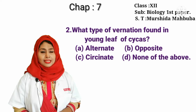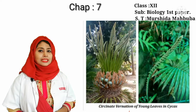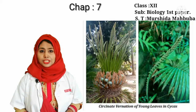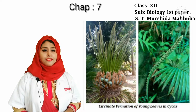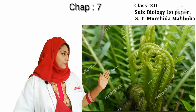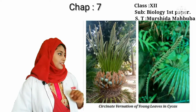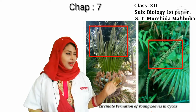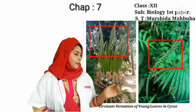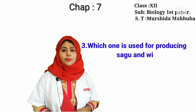Our next question is: what type of vernation is found in young leaves of Cycas? Cycas has circinate vernation, like fern. This is the circinate vernation of fern, and this is the circinate vernation of young leaves of Cycas.